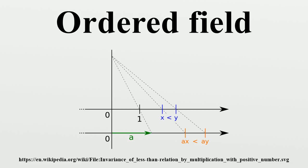Which fields can be ordered? Every ordered field is a formally real field, that is, zero cannot be written as a sum of non-zero squares. Conversely, every formally real field can be equipped with a compatible total order that will turn it into an ordered field. The proof uses Zorn's lemma.